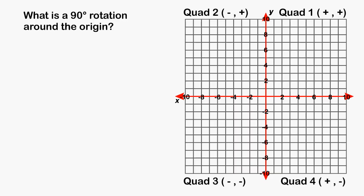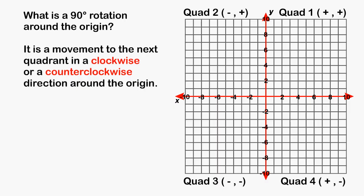During this tutorial we are going to perform 90 degree rotations around the origin, clockwise and counterclockwise. Any object being rotated 90 degrees will start in a quadrant and end up in the very next quadrant. It just depends if you are going to move in a clockwise or a counterclockwise fashion.